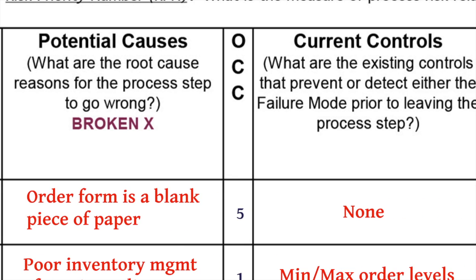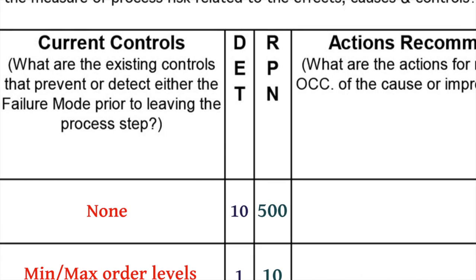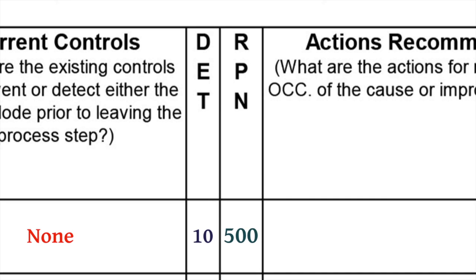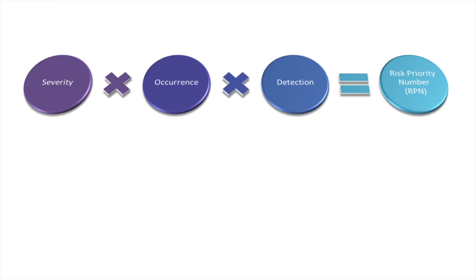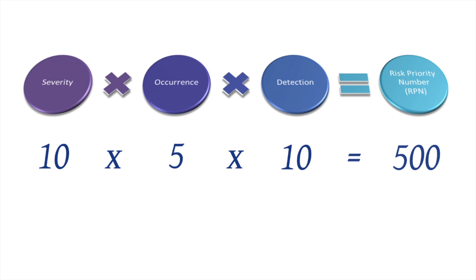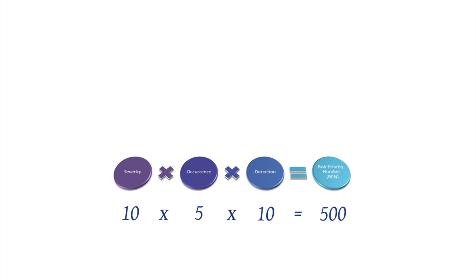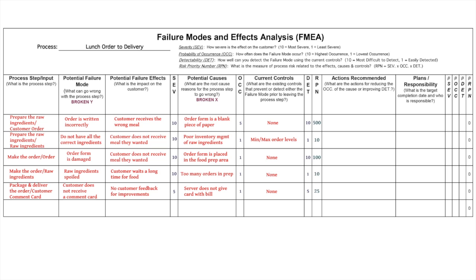With occurrence, ask: how often does this happen? With detection, ask: how likely am I to detect the failure? Back to our food delivery example, the RPN for preparing the raw food customer order is 500. We got this number by multiplying the SEV rating of 10, with the occurrence (OCC) rating of 5, and a detection (DET) rating of 10. Complete these ratings for every process step and input on the FMEA.